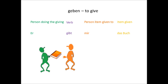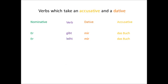There are a lot of other words that either can or must take a dative as well as an accusative, some of which match the English pretty well. For instance, to lend: er leiht mir das Buch, he lends me the book. To recommend: er empfiehlt mir das Buch, he recommends the book to me. To pass: er reicht mir das Buch, he passes me the book.